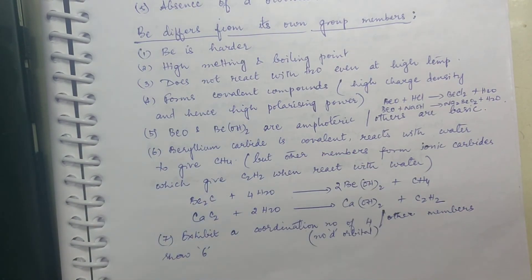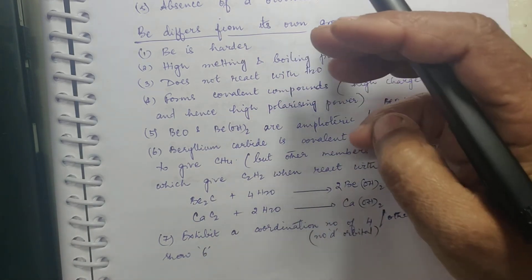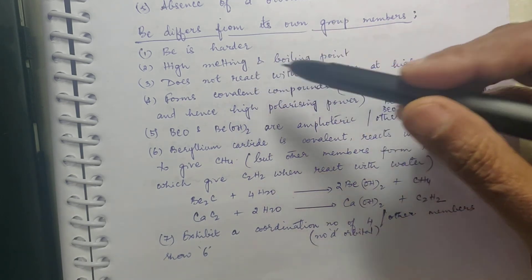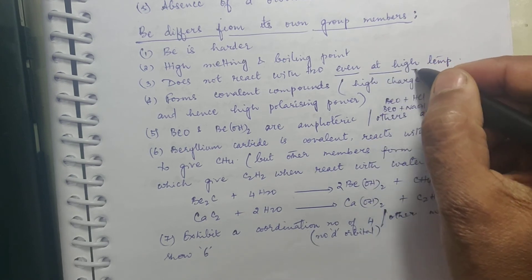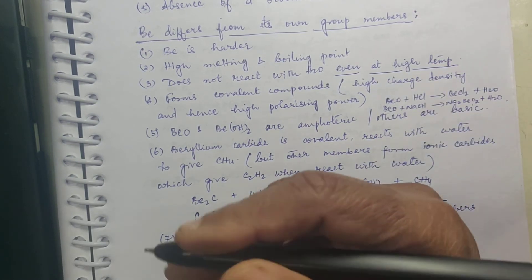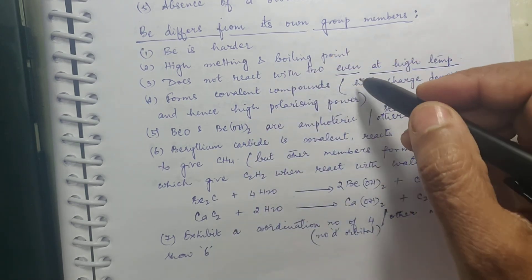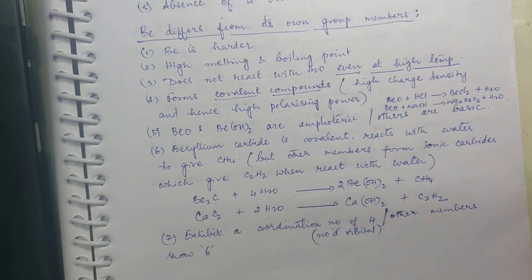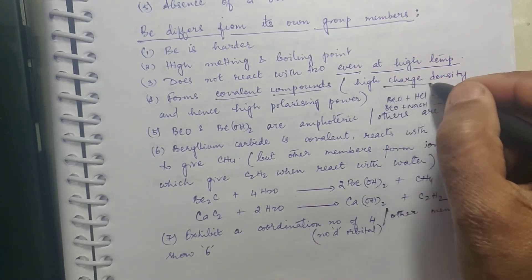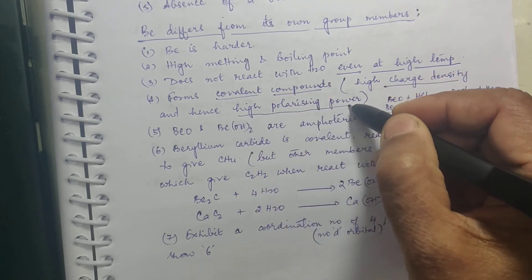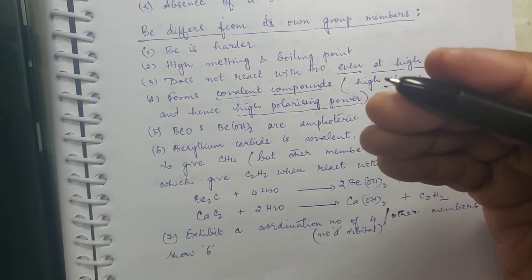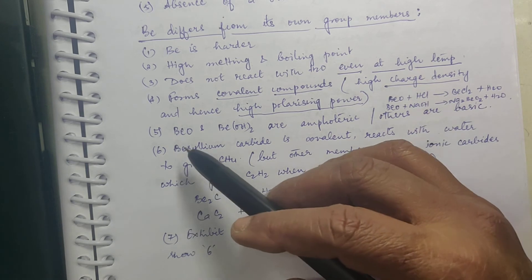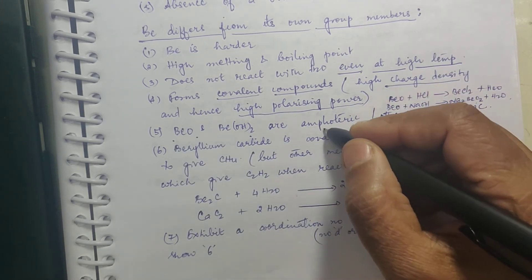Beryllium is harder than magnesium, calcium, and strontium, and has a higher melting and boiling point. It does not react with water even at high temperature — magnesium will react with hot water or steam, but beryllium will not react even at high temperature. Beryllium forms covalent compounds because of its high charge density and high polarizing power; if polarizing power is high, more covalent character is introduced in the molecule.